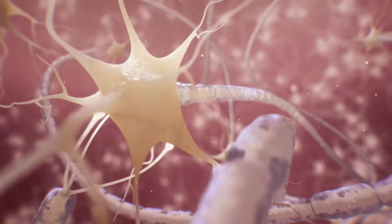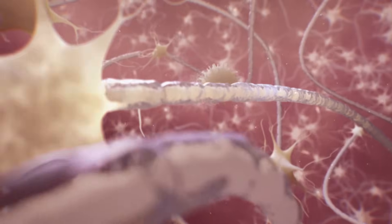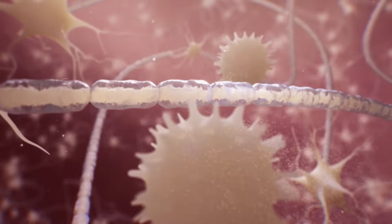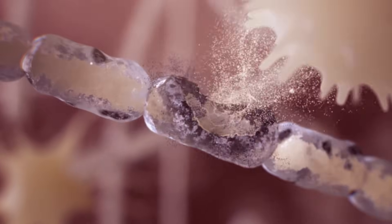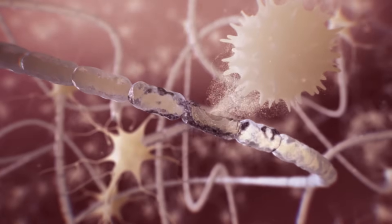The exact cause of MS is unknown, but we do know that something triggers the immune system to attack the brain and spinal cord. The resulting damage to myelin that insulates wire-like nerve fibers is a disruption of signals to and from the brain.